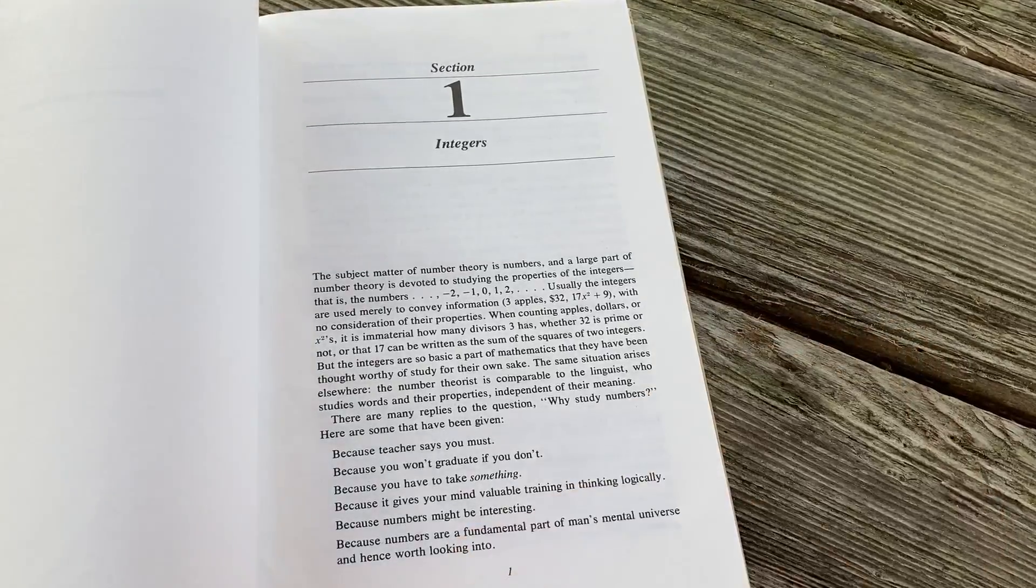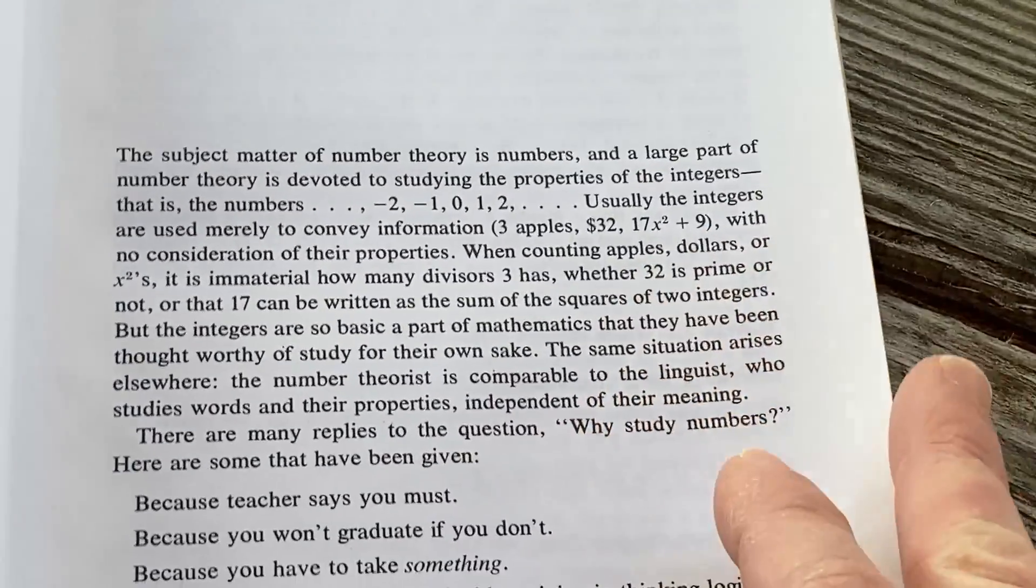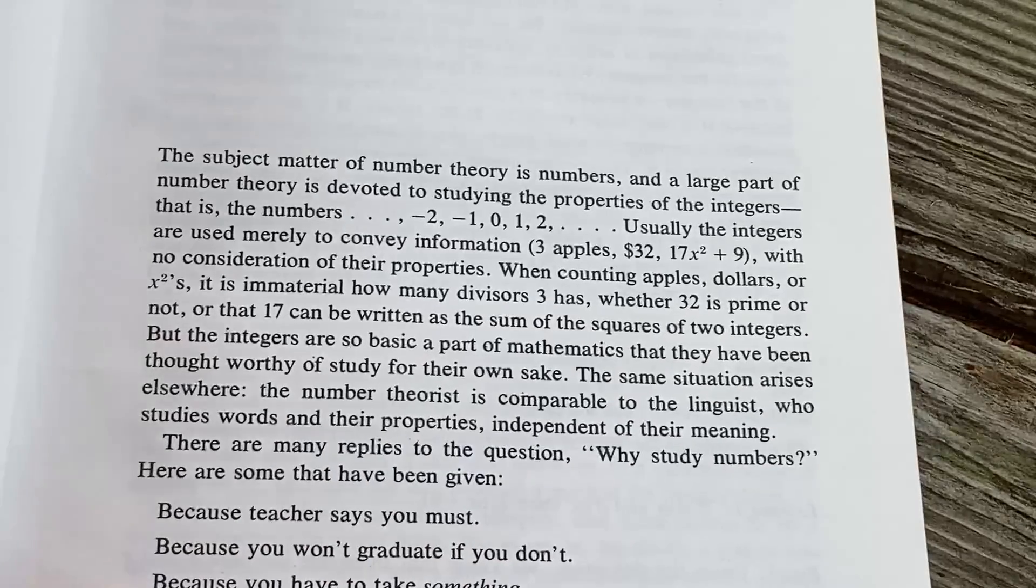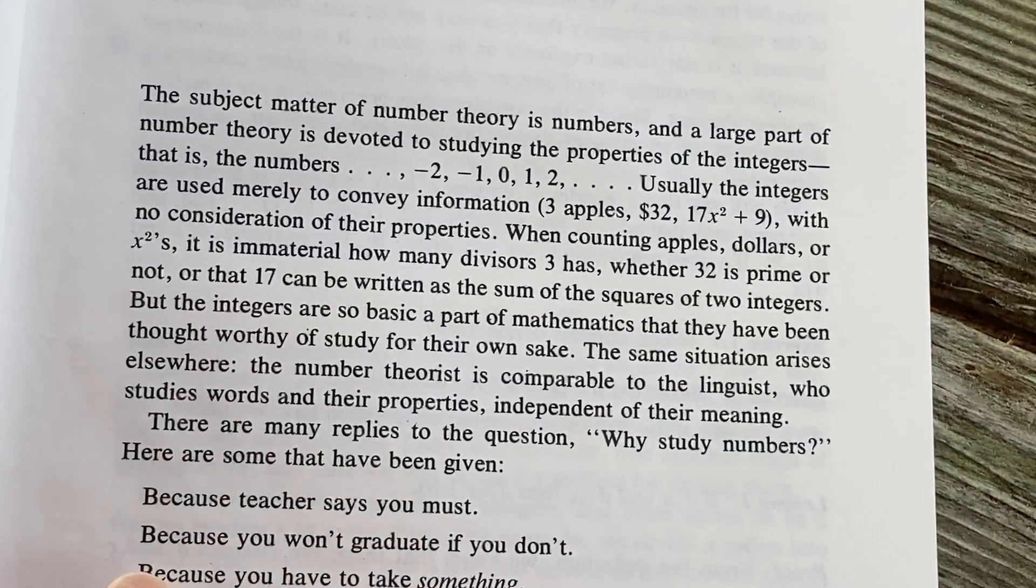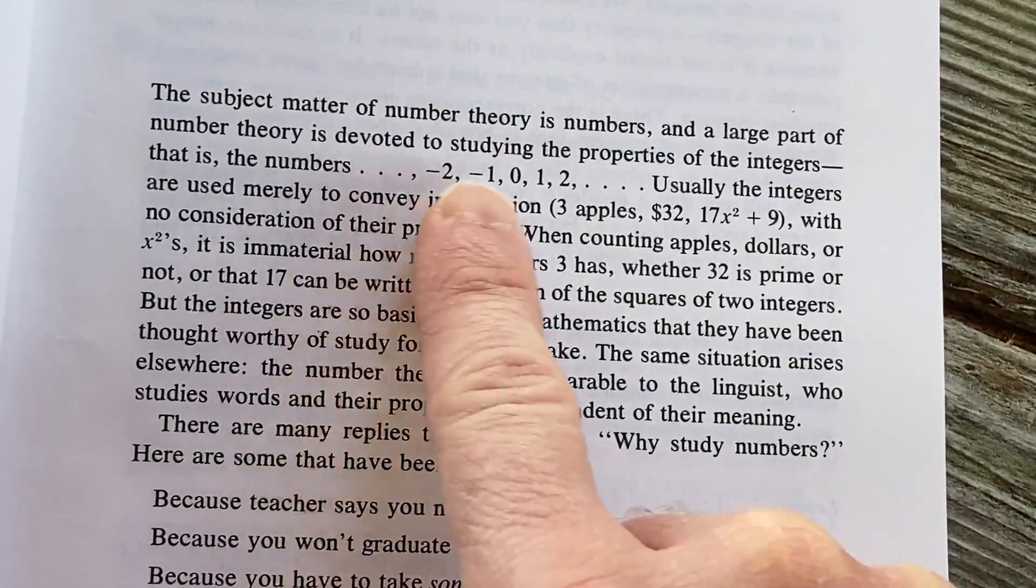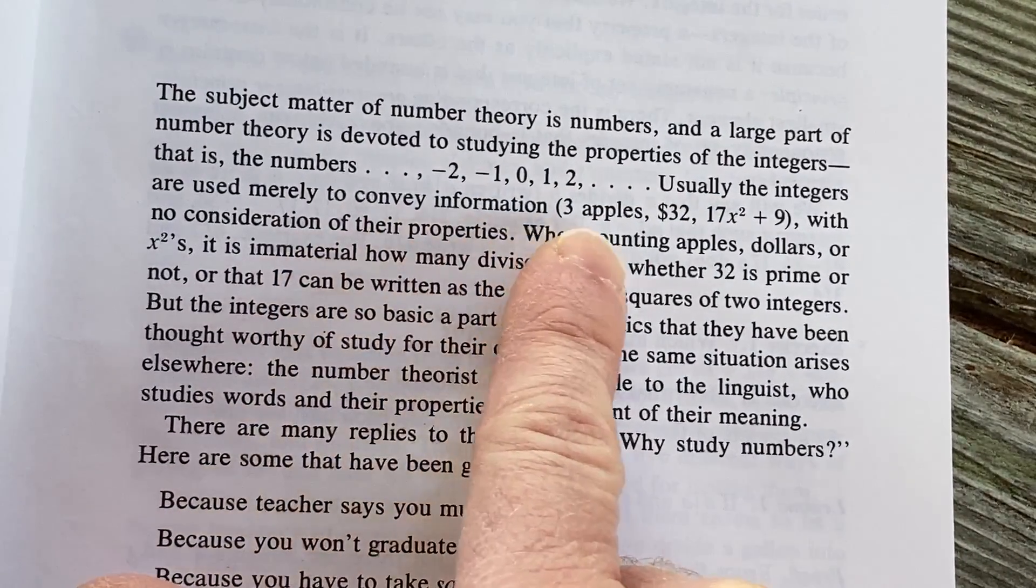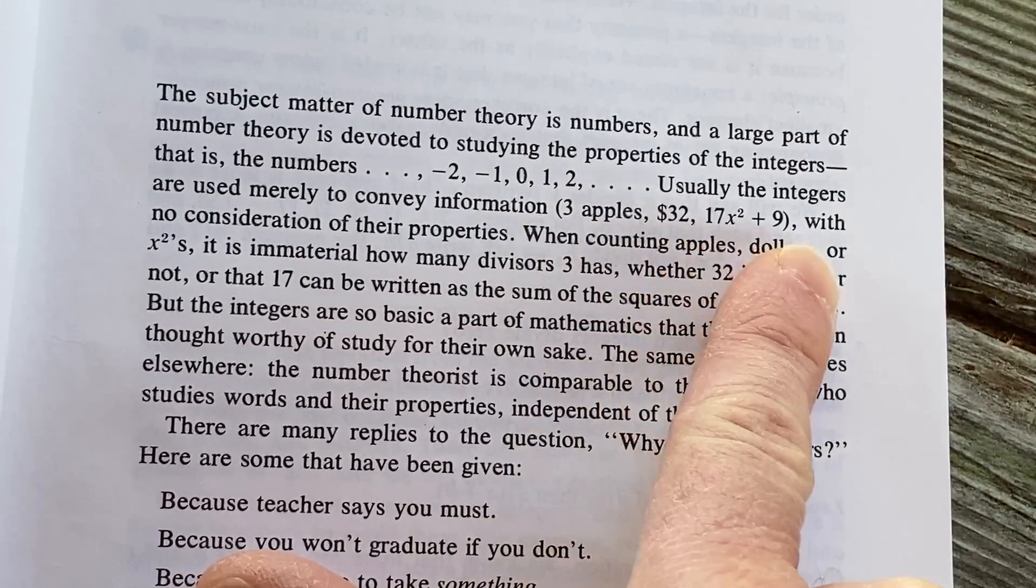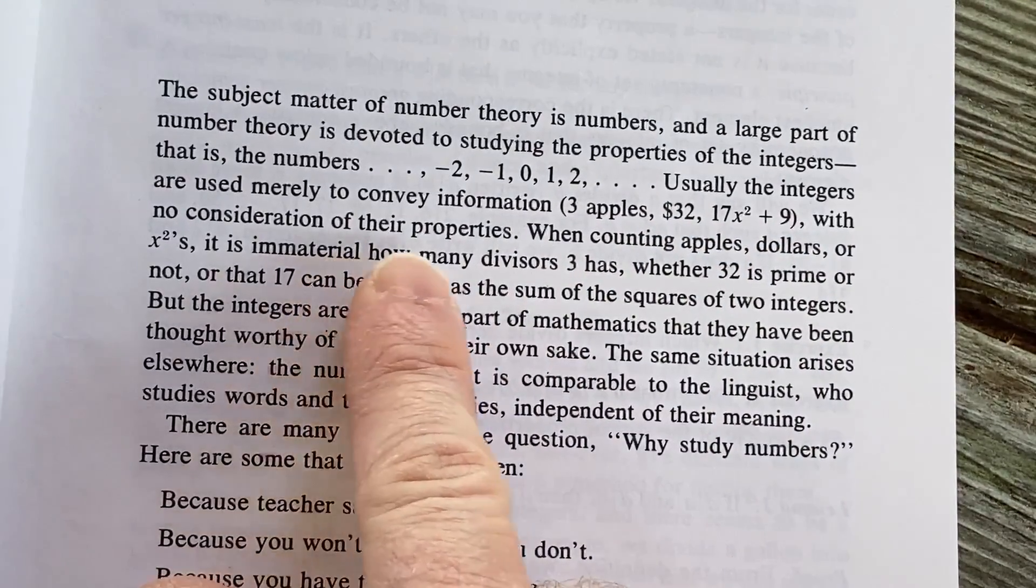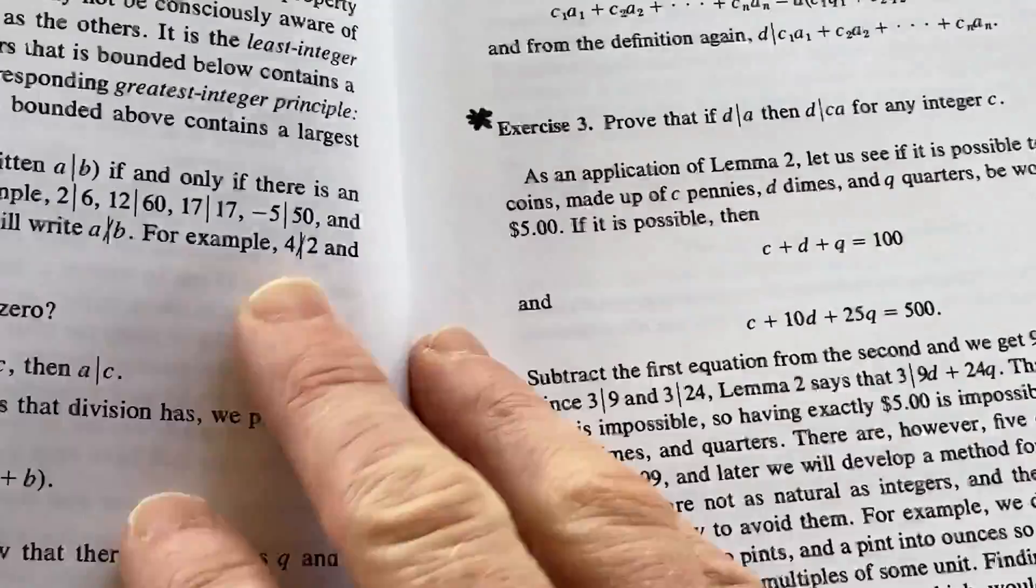Here it talks about the integers. The subject matter of number theory is numbers, and a large part of number theory is devoted to studying the properties of the integers. Usually the integers are used merely to convey information: three apples, $32, 17x squared plus 9, with no consideration of their properties. Here you have some exercises.